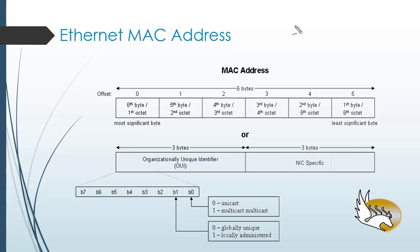Of course, because this is a layer 2 address, it is only used inside the subnet. We cannot use a MAC address outside of the subnet. If I want to send a frame to some destination that is out of my subnet, I have to send it to my router. So instead of putting the destination's MAC address, I put my router's MAC address on the frame to send it outward.